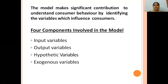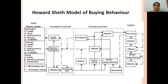Now we will learn in detail about these variables. Let us first see a pictorial representation of the entire model and the different variables involved. The Howard-Sheth model of buying behaviour has four important variables. The first is input variables, which form the input stimulus display, and within this we have Significative, Symbolic, and Social variables.